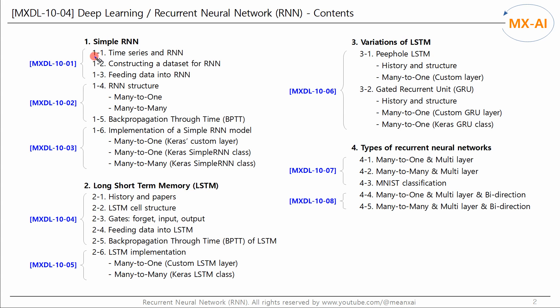In the last three videos, we looked at simple RNN. It struggles to learn long-term dependencies because of vanishing or exploding gradients. That is, it is difficult to learn information from the distant past simply by increasing the number of time steps.